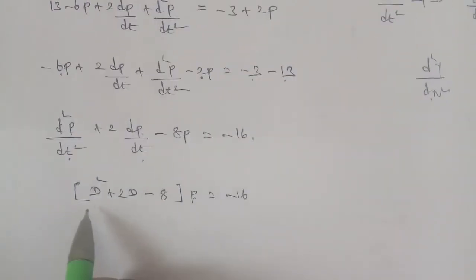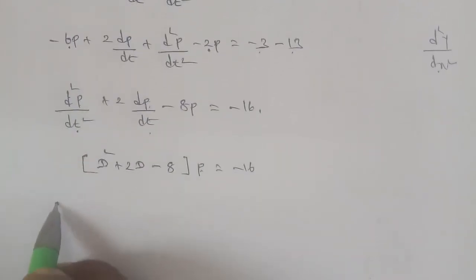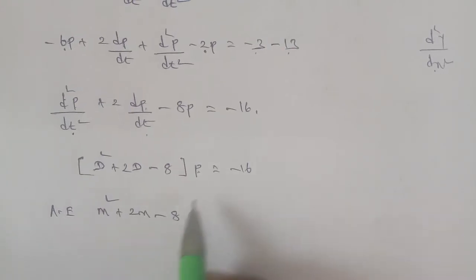For the d/dt we need to apply d to m term. The auxiliary equation is m² plus 2m minus 8.